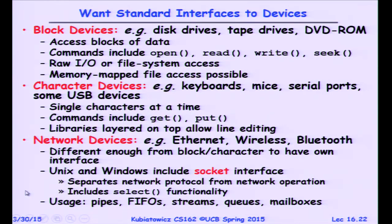Network devices are kind of their own unique thing — loosely associated with a physical device like a wireless card, but the interface is a socket interface. Examples include Ethernet, wireless, and Bluetooth network devices. You open and close a socket, make a connection with some remote socket, then do reads and writes. Many things like pipes, FIFOs, streams, queues, mailboxes, and so on are all built out of sockets.